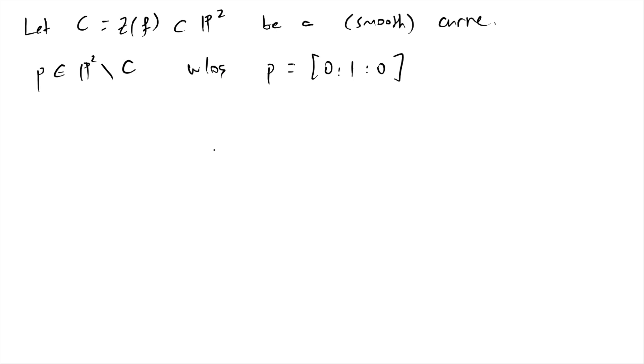Now we have a projection. This is a projection map from the point p to p1. If you want to see what's going on here, so in particular if p wasn't this point, p2 comes from projectivizing c3. And p really is just a line.